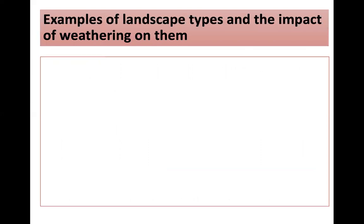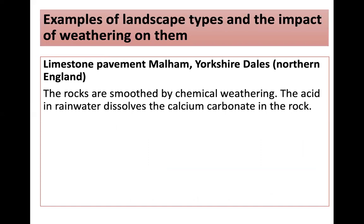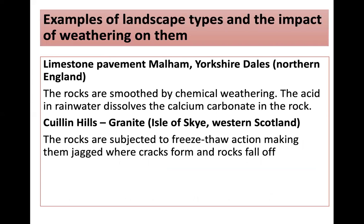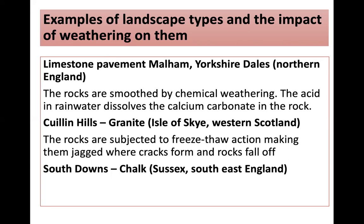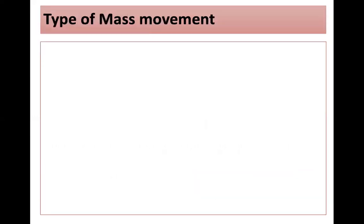Examples of weathering impacts on different landscapes: Malham in the Yorkshire Dales, where rocks are smoothed by chemical weathering as acid in rainwater dissolves the calcium carbonate. The Cullins on the Isle of Skye, a granite landscape, are subjected to freeze-thaw action, making them jagged where cracks form and rocks fall off. The South Downs, chalk in Sussex, where chalk dissolves in rainwater over time, leading to smooth rolling hills.